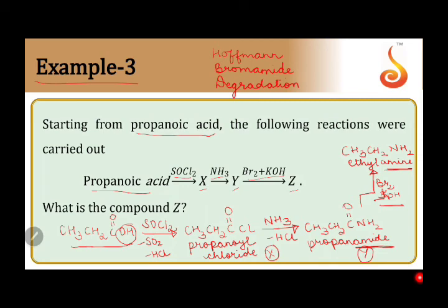Propanoyl chloride is obtained. On reaction with ammonia, HCl is lost to give propanamide. The amide reacts with bromine and KOH causing degradation to an amine with one carbon less. Propanamide becomes ethylamine. Therefore, compound Z is ethylamine.